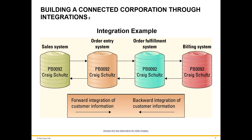This picture shows how forward and backward integration work across sales, order entry, order fulfillment, and billing systems. For example, in the order entry system, an employee can update the customer's information. Through integration, this information can be sent upstream to the sales and downstream to the order fulfillment system.